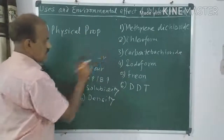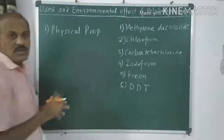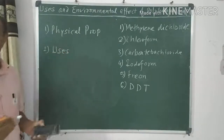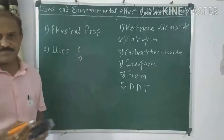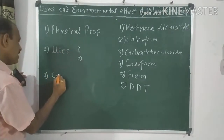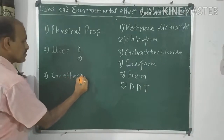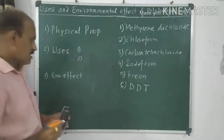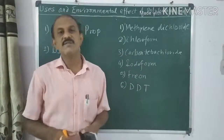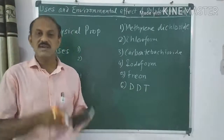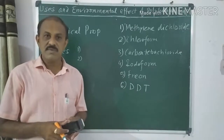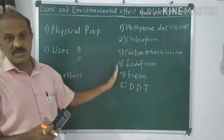We have to discuss each polyhalogen compound using its general uses — one, two, or three — and then its environmental effects. The environmental effect means the effect of the polyhalogen compound on all things that come under the environment: humans, animals, insects, soil, atmosphere — everything in the environment.